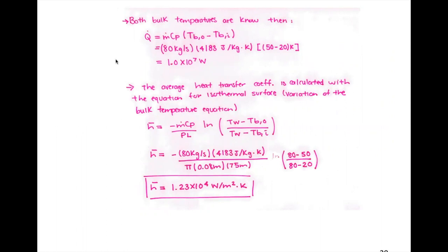Both bulk temperatures are known, so we can calculate the heat transfer rate using the general energy balance, M·CP. We also get the average heat transfer coefficient from the isothermal surface equation — the variation of the bulk temperature equation. So we get H out of that equation. H equals mass flow rate times CP, divided by the wet perimeter times the length, times the natural log of (T-wall minus T-bulk-out) over (T-wall minus T-bulk-in). That gives us the convective heat transfer coefficient.